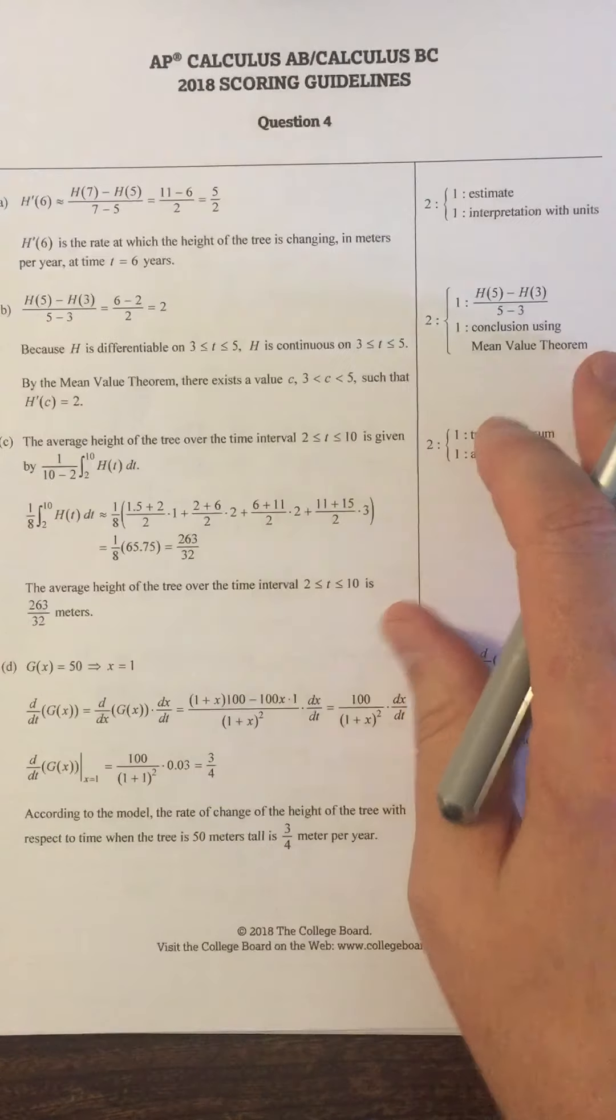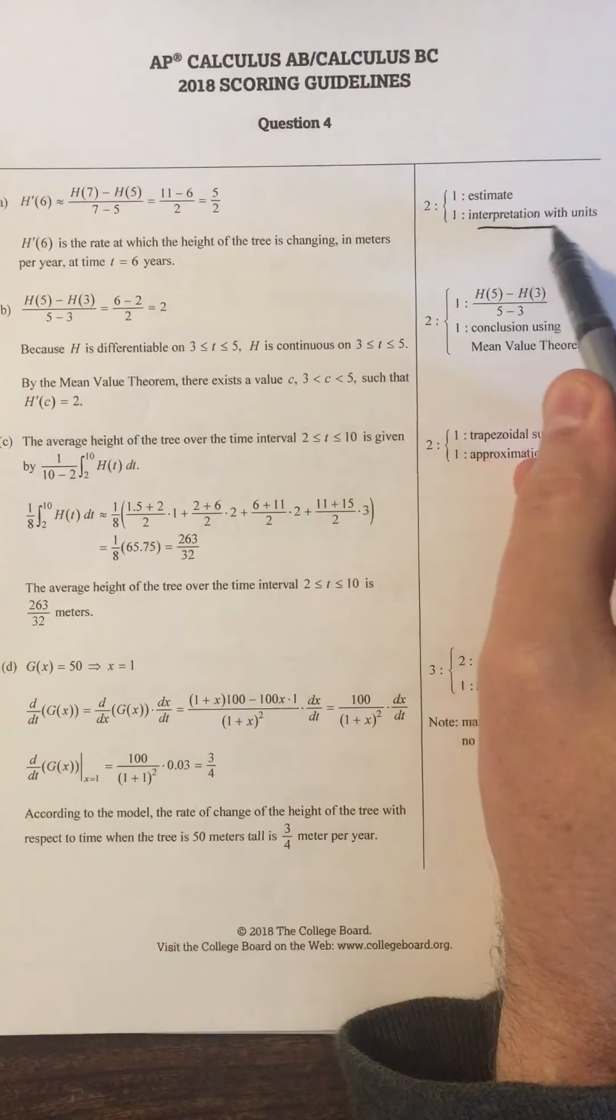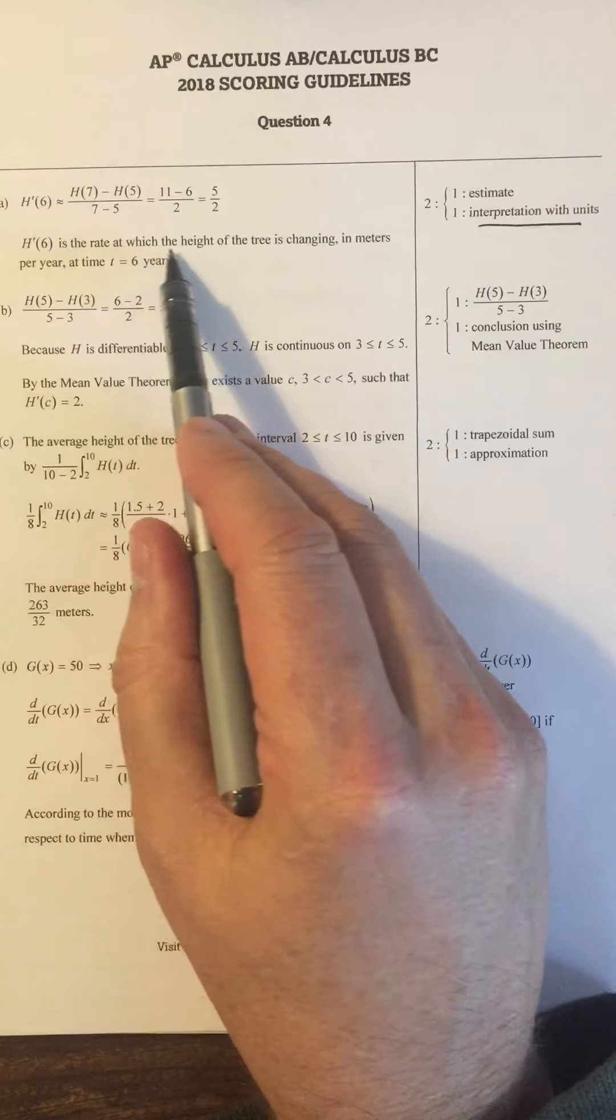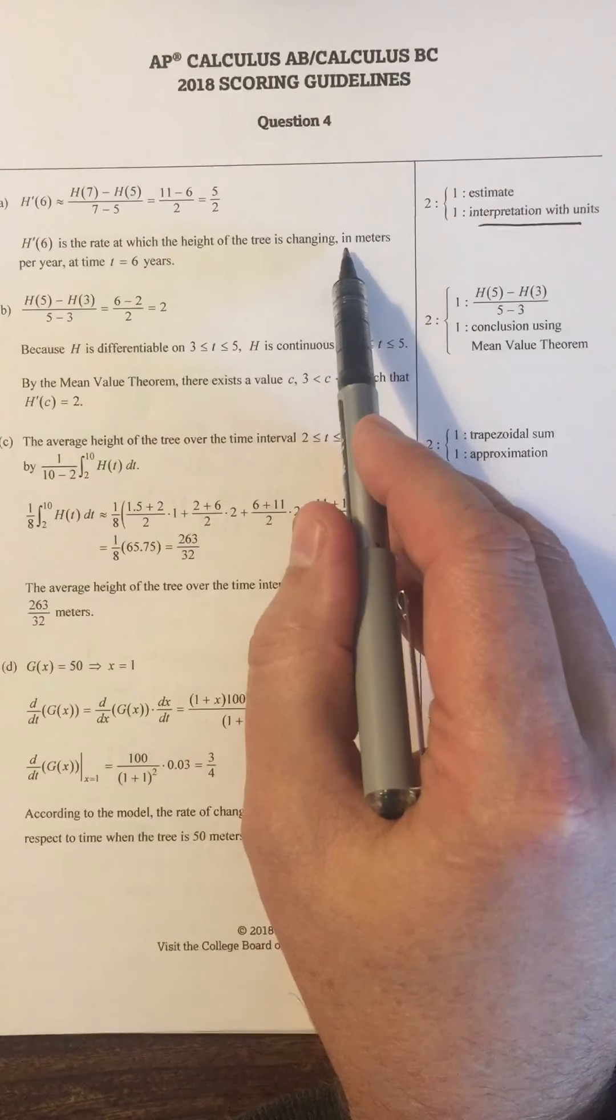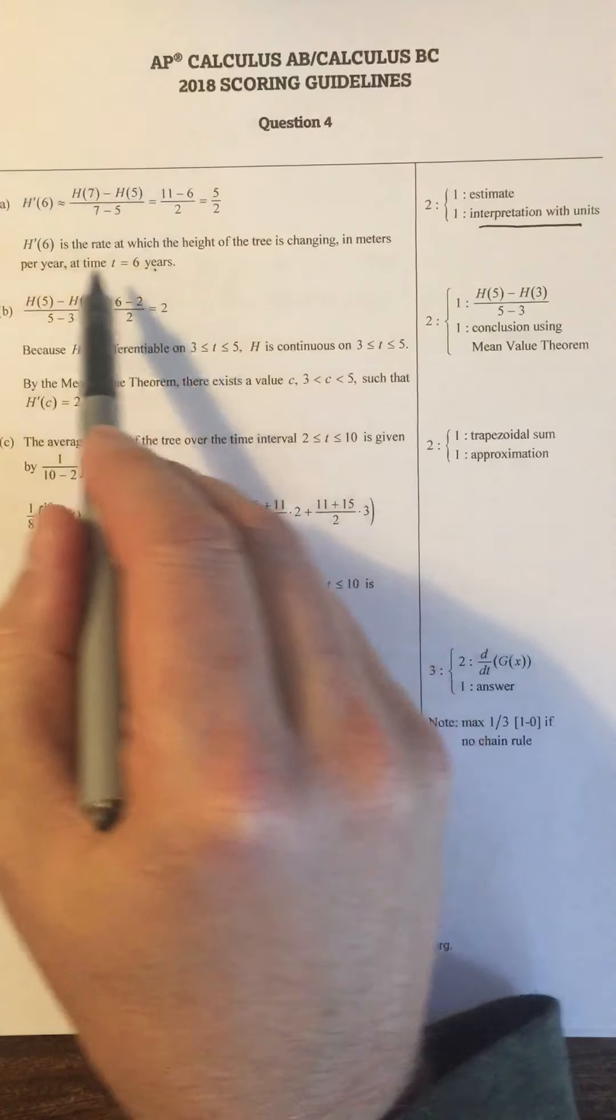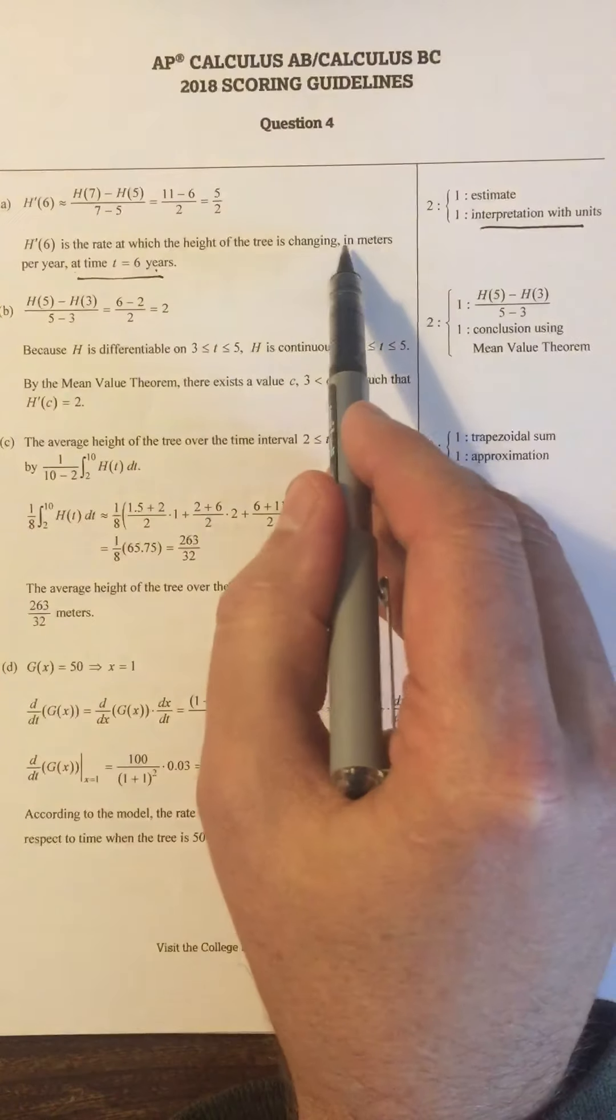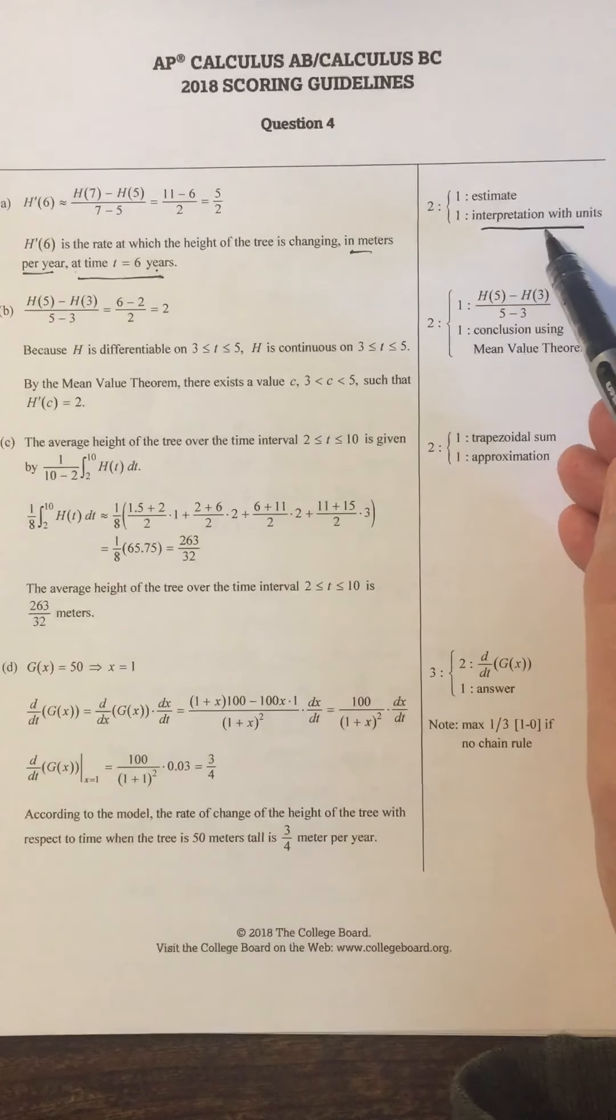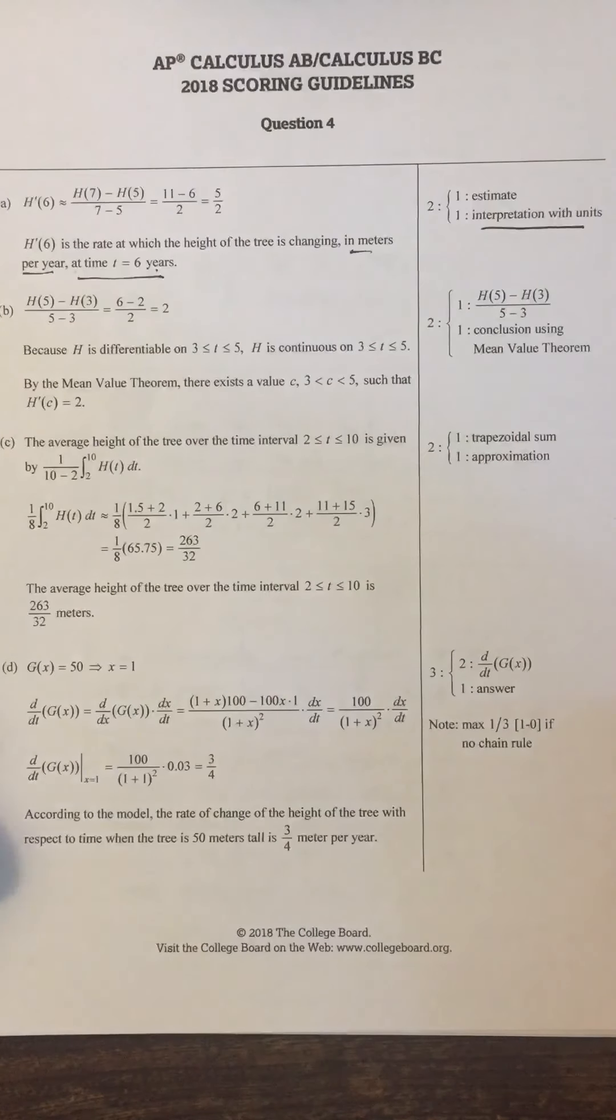Things that are worth mentioning: interpretation with units. You have to say that it is the rate at which the height of the tree is changing in meters per year at time t equals six. You have to have the meters per year and all of that in order to get this point. The estimate, I think, is the easy point.